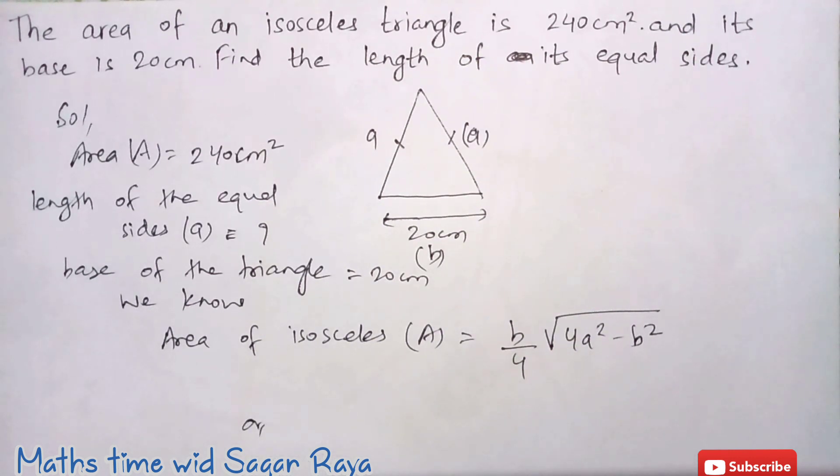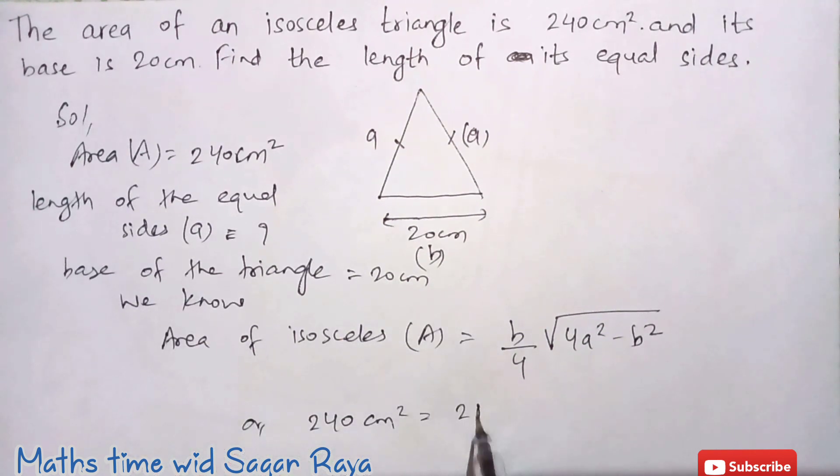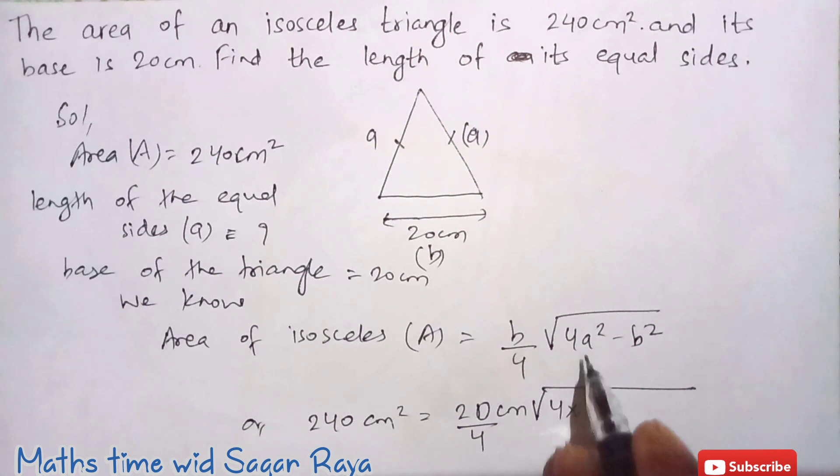Now using this formula we can find the equal sides. So area of isosceles triangle is 240 cm square and b means 20, so b is 20 here given.